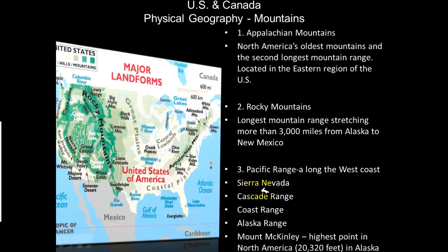Along the west coast there are several other mountain ranges: the Sierra Nevada range, the Cascades, the Coast Range, and the Alaska Range. Mount McKinley, located in Alaska, is the highest point in North America. All of these ranges are located along the western portion of the continent.